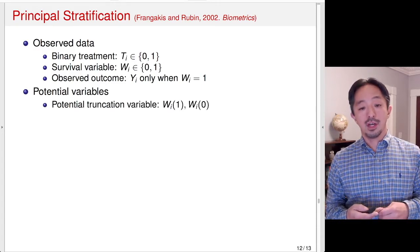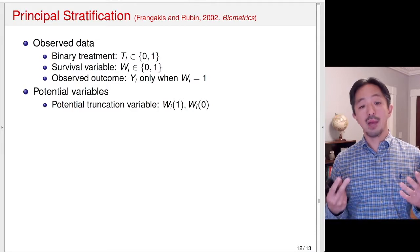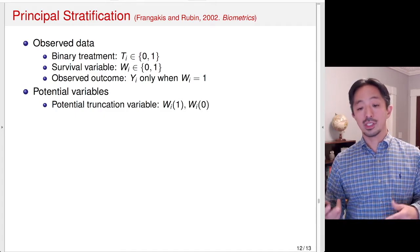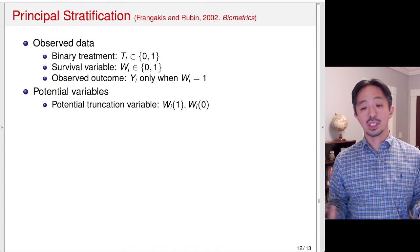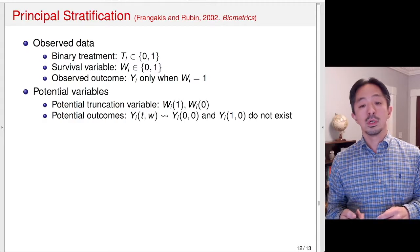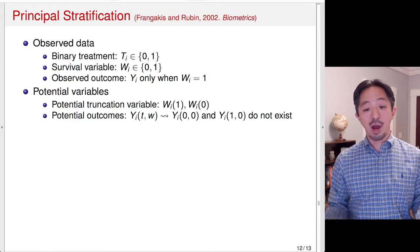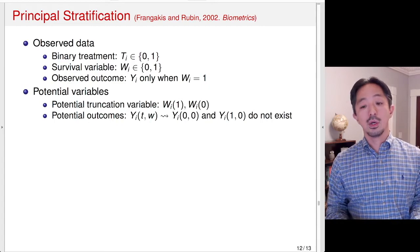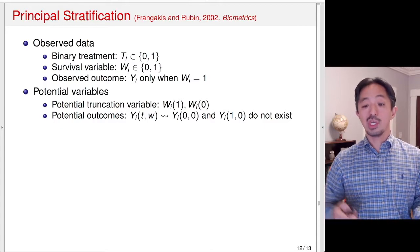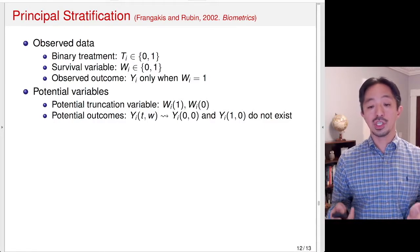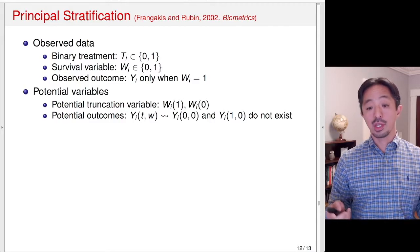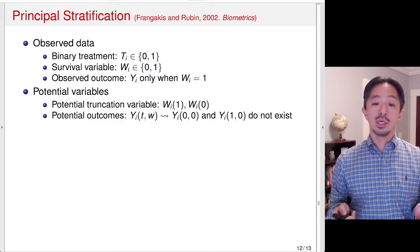Now let's look at the potential variables. The survival may be affected by the treatment. So there is a survival status if you are treated, W(1), and survival status under the control condition, W(0) — that's the potential truncation variable. We can also think about potential outcomes, which are only defined when W equals 1. So they are a function of both treatment and survival, but only defined when W equals 1. So Y(0,0) and Y(1,0) do not exist or are not defined. The only things that are defined are Y(1,1) and Y(0,1).